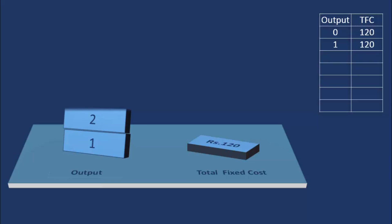He expands the output to 2 units. The total fixed cost remains unchanged. Thus, as the producer goes for higher output and examines what happens to TFC, TFC remains unchanged at Rs. 120.